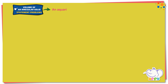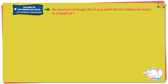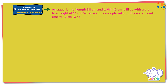An aquarium of length 30 centimeters and width 10 centimeters is filled with water to a height of 10 centimeters. When a stone was placed in it, the water level rose to 12 centimeters. What is the volume of the stone?